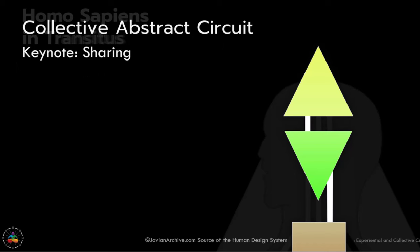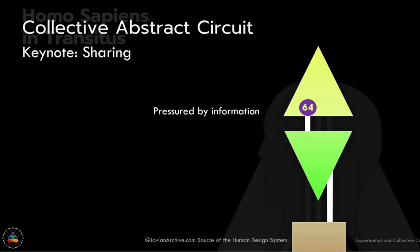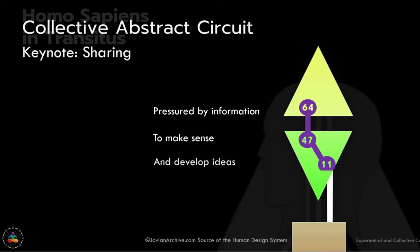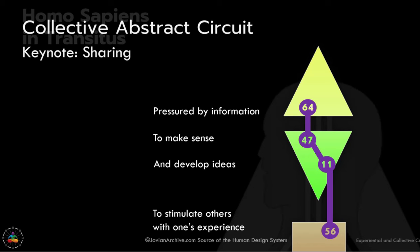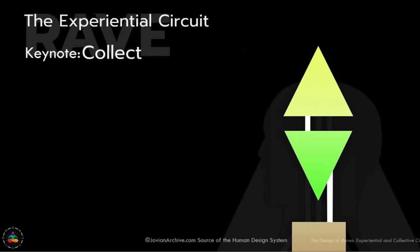That is about the collective abstract circuit with its keynote of sharing. What it is to be human is that you are pressured by certain information you can access, and that pressure becomes the bedrock of making sense out of developing ideas and stimulating other people with our shared human experience — and the potential of what that experience can bring when it comes to making sense of things, the past. But if we change things and go into the future and take a look at raves, something very different emerges.